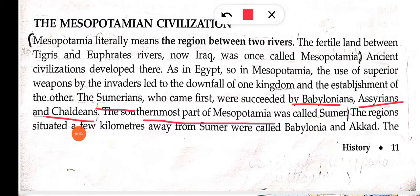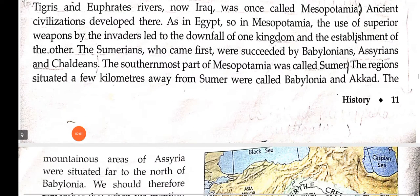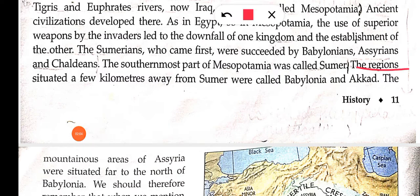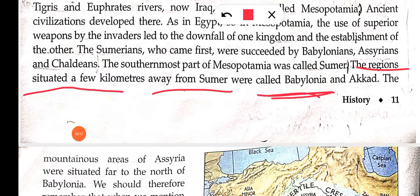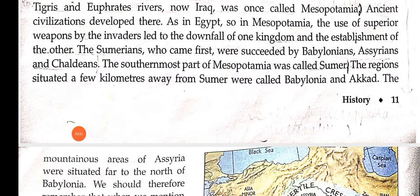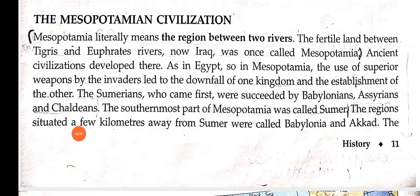The southernmost part of Mesopotamia was called Sumer. Mesopotamia ke southernmost point ko hum Sumer kahte hain. The region situated a few kilometers away from Sumer was called Babylon. Sumerian region se thoda sa aage jaoge to aapko Babylonian region milega — Akkad region. Is paragraph se aapko learn karna hai: do river ke beech mein hai Mesopotamia.